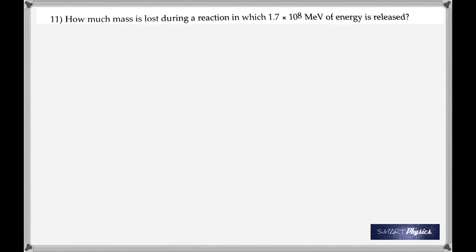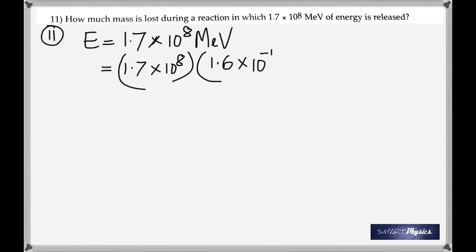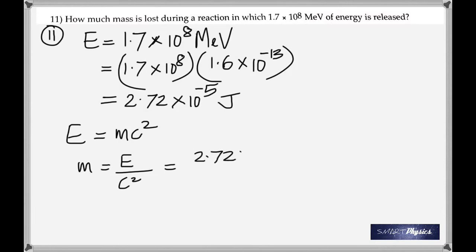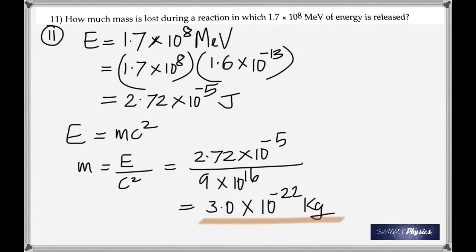How much mass is lost during a reaction in which 1.7 times 10 to the 8 mega electron volts of energy is released. You've got to change that into joules. And you know that 1 electron volt is equal to 1.6 times 10 to the negative 19 joules. So just multiply this with 1.6 times negative 13, because it's mega, because mega is 10 to the 6. So 10 to the negative 19 becomes 10 to the negative 13. And once you get that, use the relativity equation and find the mass that should have been destroyed during the reaction. 3.0 times 10 to the negative 22 kilograms.